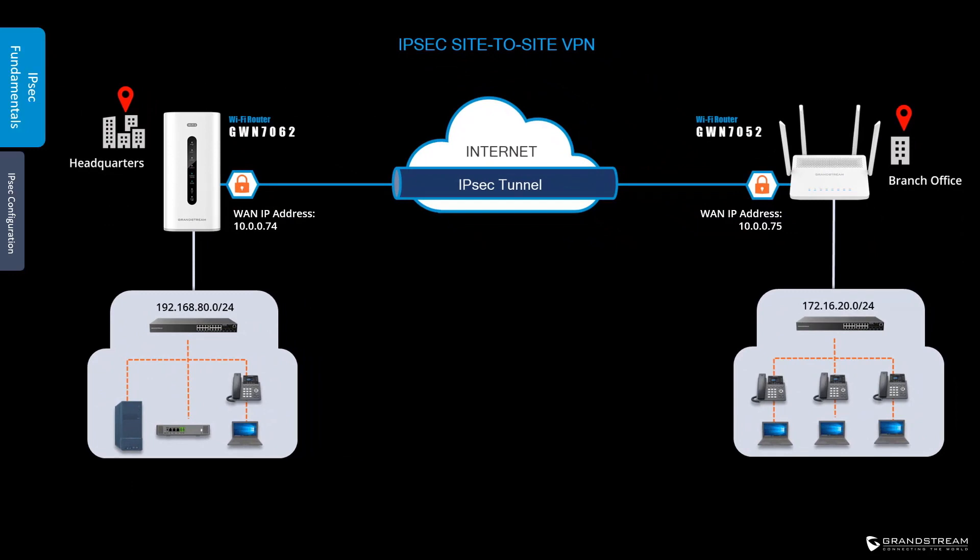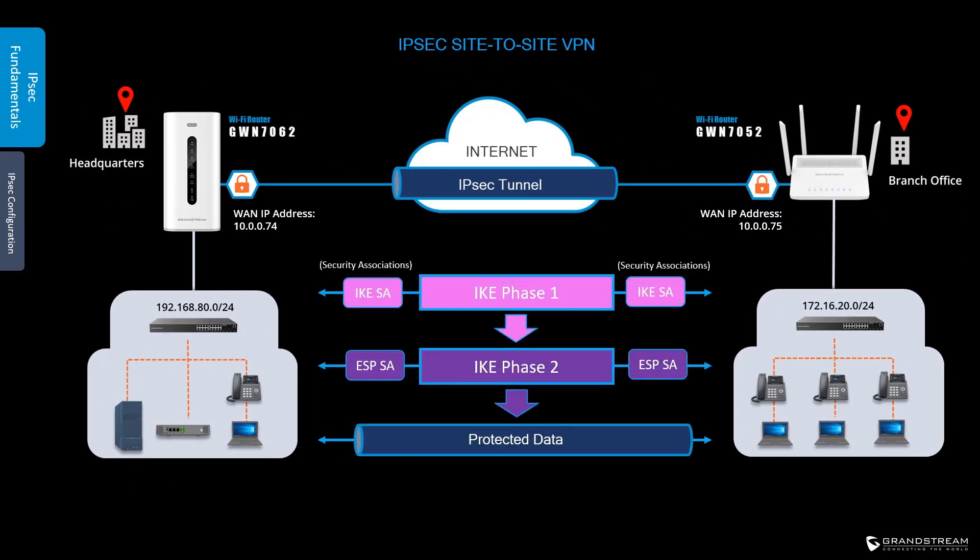In an IPsec site-to-site VPN connection, a secure tunnel is established between two routers to extend corporate resources to a branch office network. The two routers should be configured with the remote private networks to determine which traffic should be sent through the secure tunnel. The security parameters of the IPsec tunnel should also be defined, and it is important that the security protocols selected on both routers match for the security association to complete successfully.